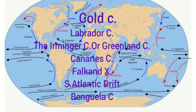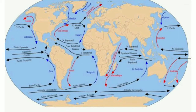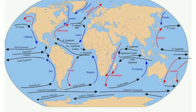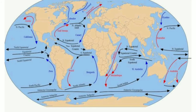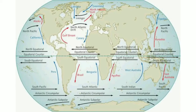The Falkland Current flows northwards along the eastern coast of South America up to Argentina. The South Atlantic Drift flows under the influence of the Westerlies at about 40 degrees latitude, where the Brazilian Current continues as the South Atlantic Current. The Benguela Current flows northwards along the western coast of South Africa.